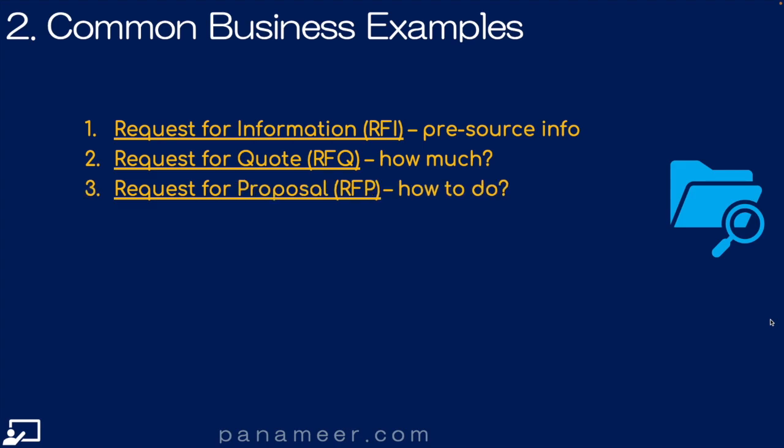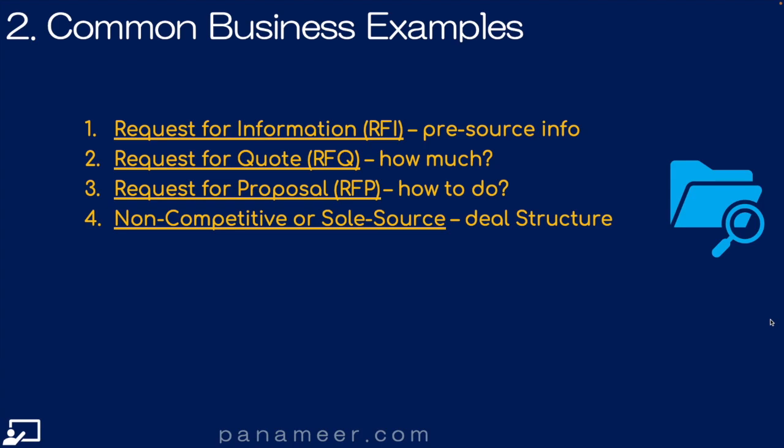Here we have a request for proposal. I might use an RFI to get some information to create an RFP because I don't know what to do, as opposed to knowing what I want and just needing to know how much, which is my RFQ. Now we use something a little bit more complex: a non-competitive or sole source justification. Here I'm just worried about the structure of the deal, and more particularly, I want to make sure that I marry up the contractual requirements to what's being asked inside of my negotiation or sourcing event.